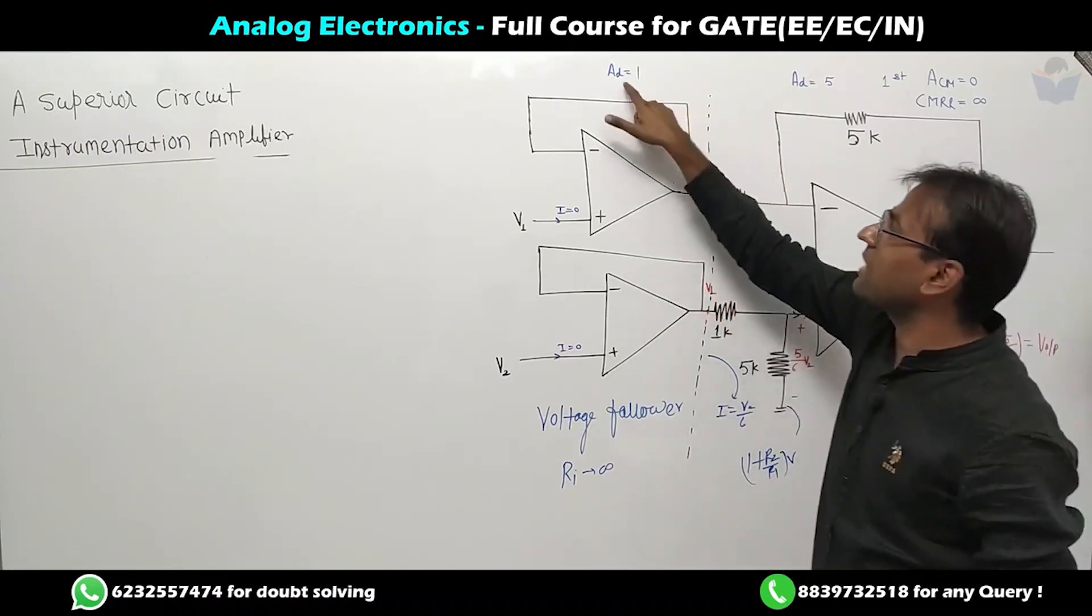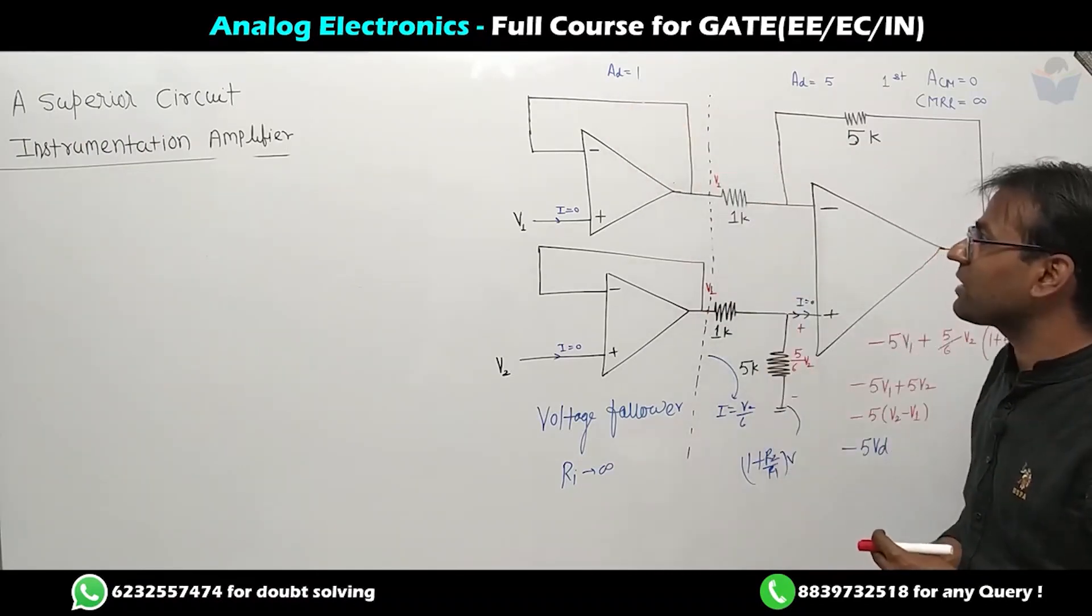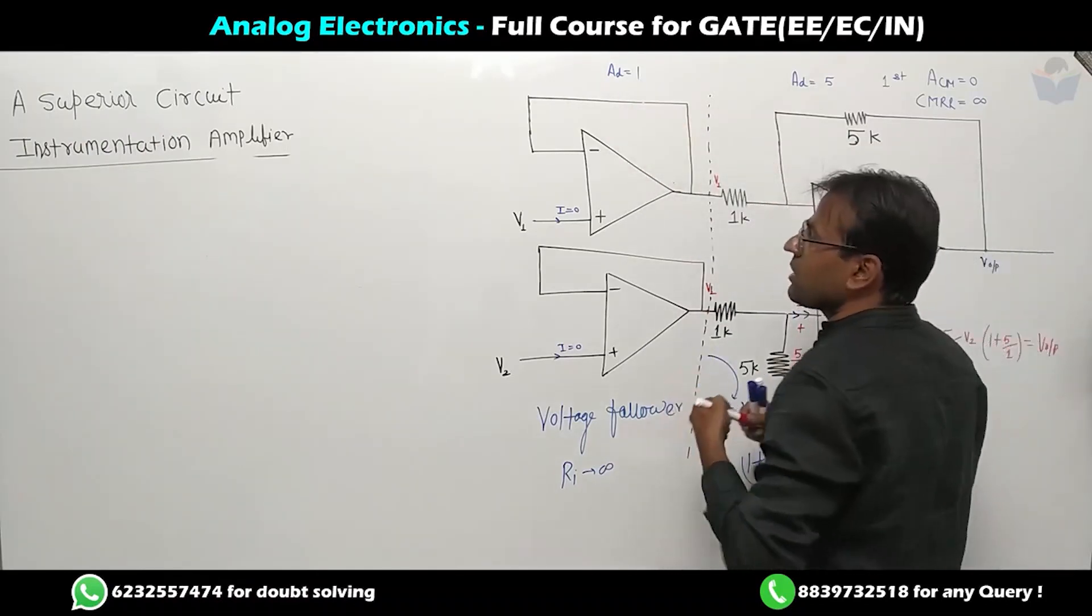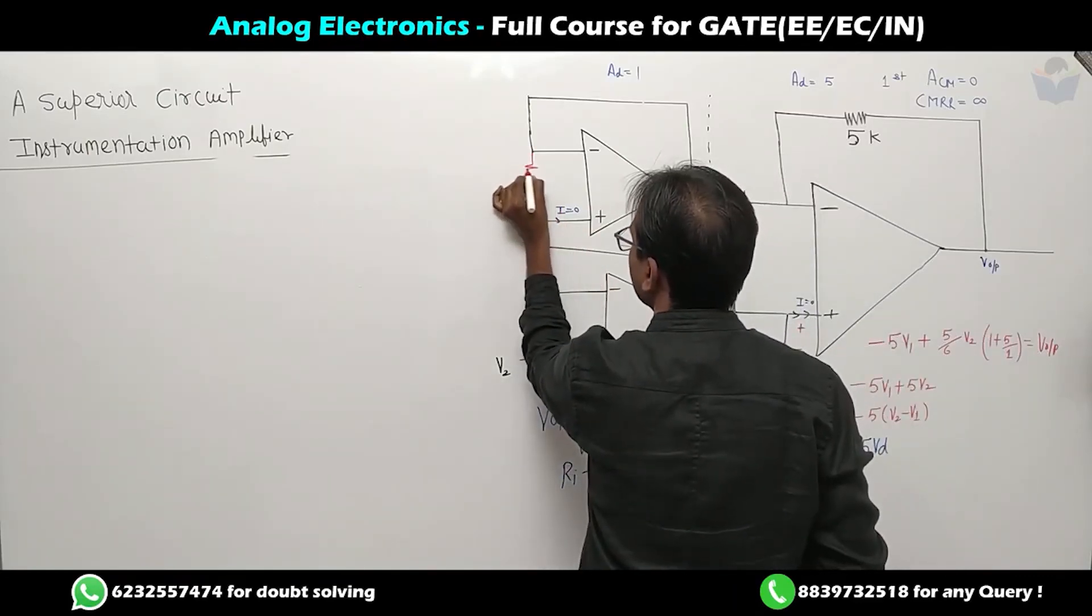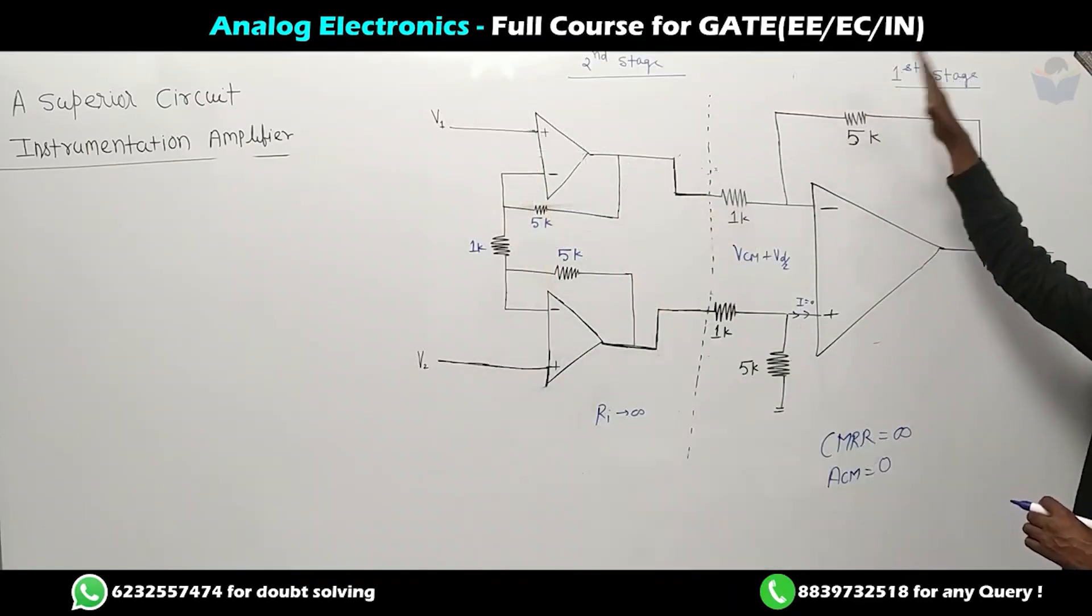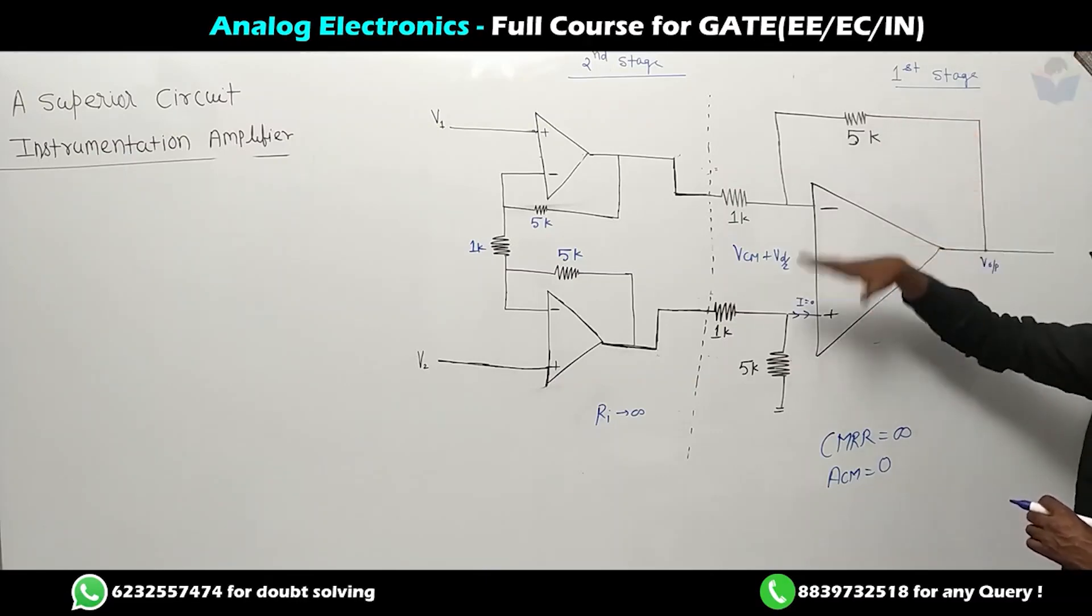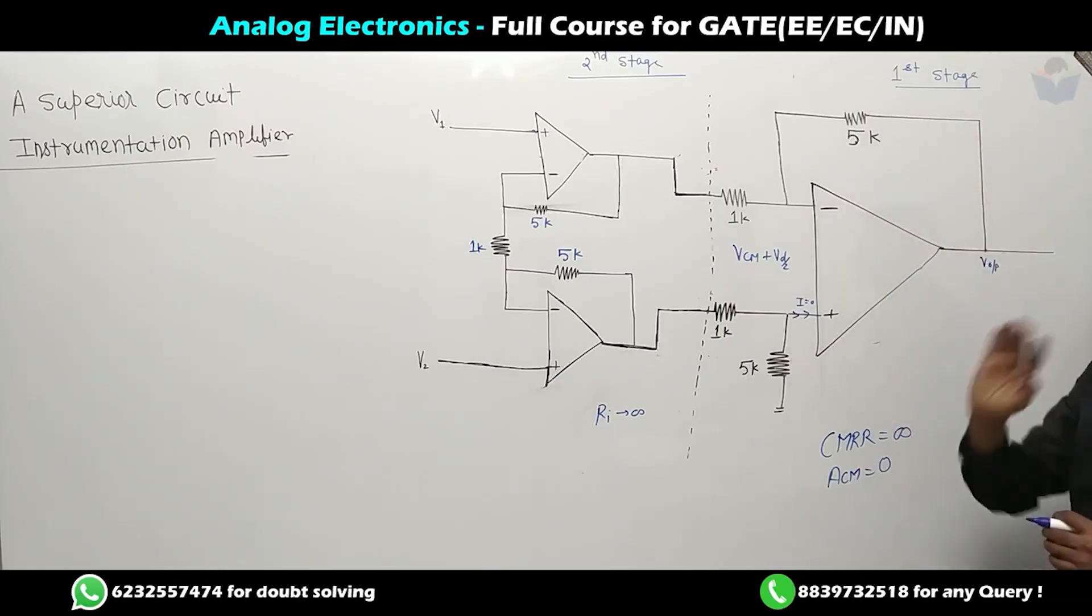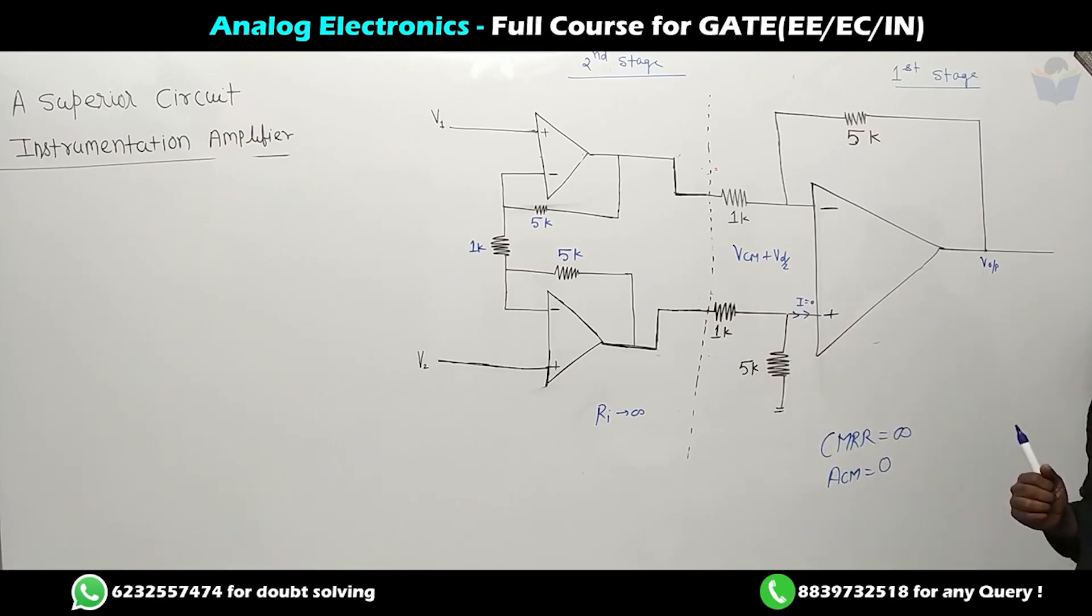If I want to increase the gain from one, then let's add two resistances so that common mode signal is not amplified, differential signal is amplified, and input resistance is high. This circuit satisfies all these conditions.